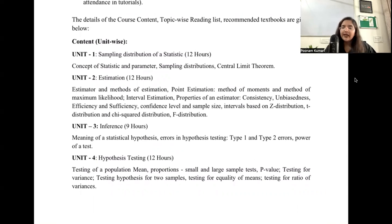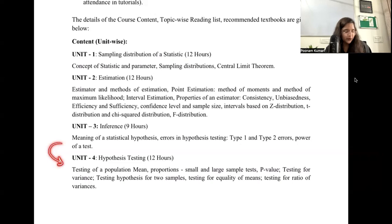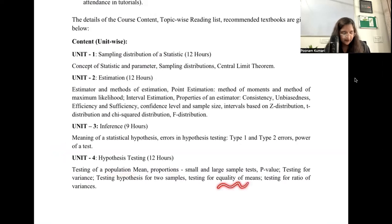Under estimation: how to estimate, what is point estimation, what are different methods of estimation, what properties should your estimator have, and what are the distributions involved — all of this forms Unit 2. Unit 3 is inference — meaning you use information from your sample to make statements about the population and check how correct or incorrect those statements are.